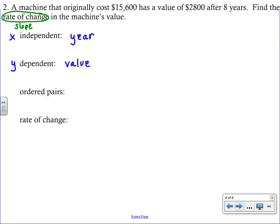So independent is x, dependent is y. And unlike the last problem, we're not given numerical values for the year. We are just told that originally, the machine was $15,600. So I'm going to say originally is year 0. So when the machine was brand new, it wasn't even a year old, it was 0. So year 0, the value of the machine was $15,600. The second ordered pair is going to come from the $2,800 after eight years. So again, you have to be careful with the order. Years is the independent variable, so that has to be x. And then the value is the dependent variable, so that has to be y.